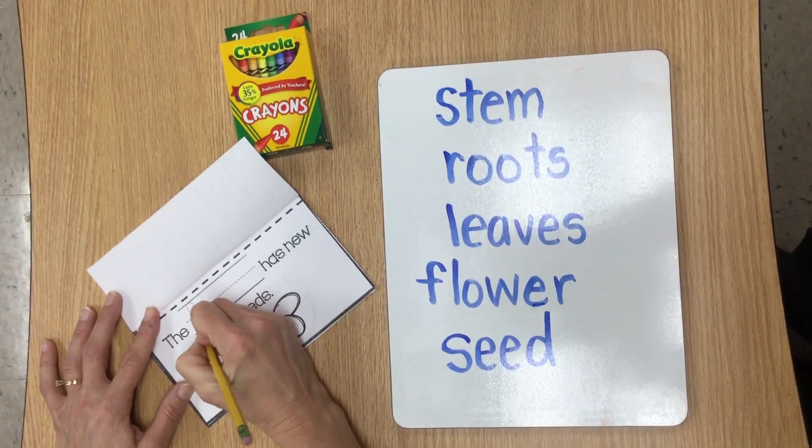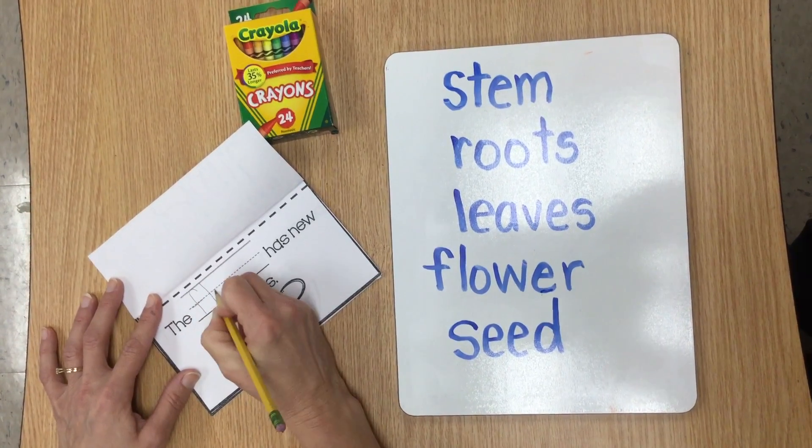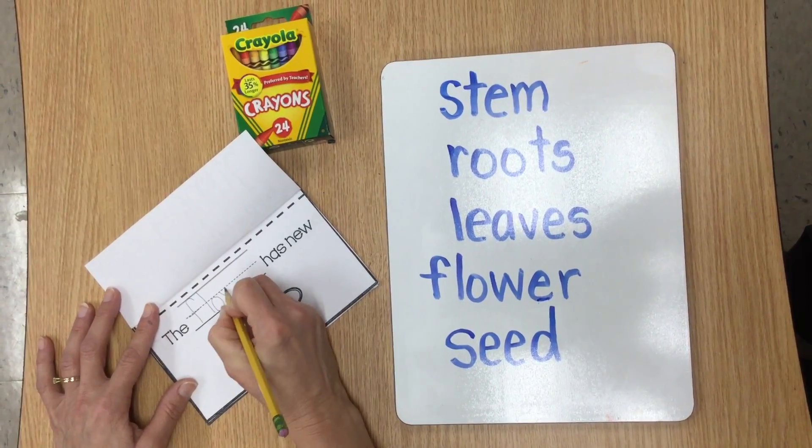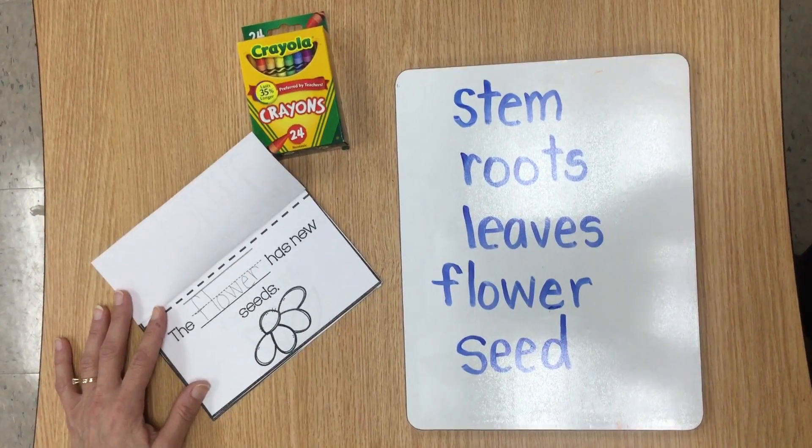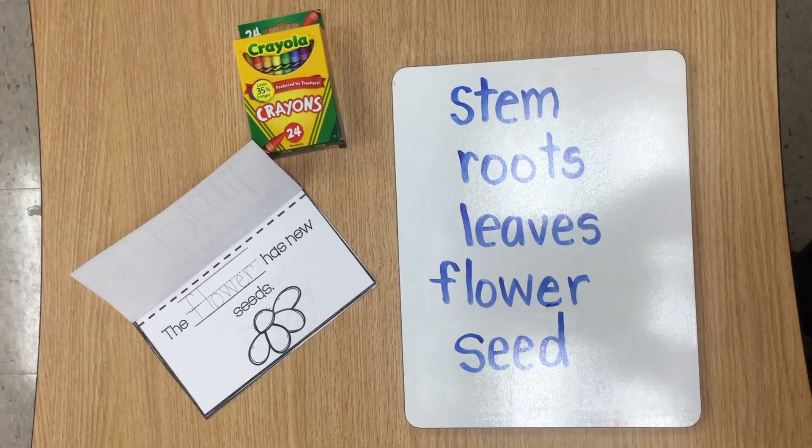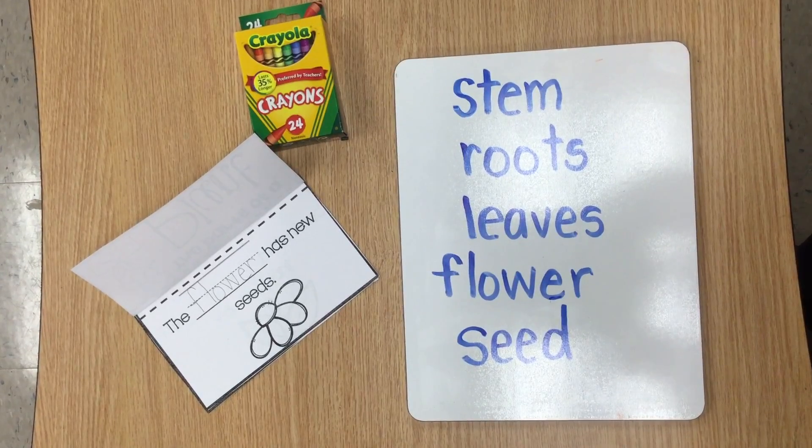So I'm going to write the word flower, neat as I can, on this line. And then I'm going to color my picture. Go ahead and pause the video while you color your picture in.